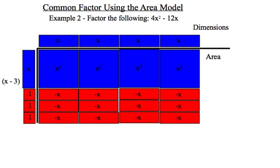So the dimensions on the left side are x - 3. The dimensions along the top are 4x. So my factored form of 4x² - 12x would equal 4x times bracket (x - 3).